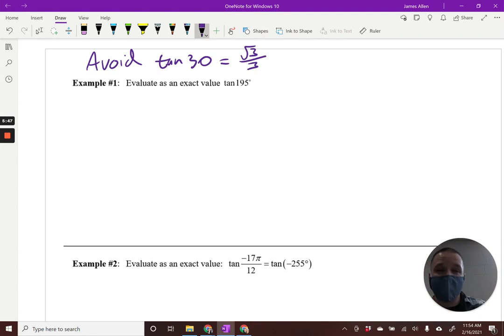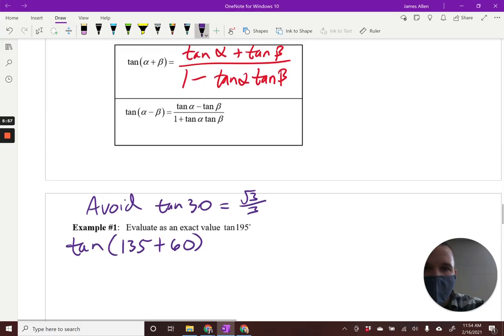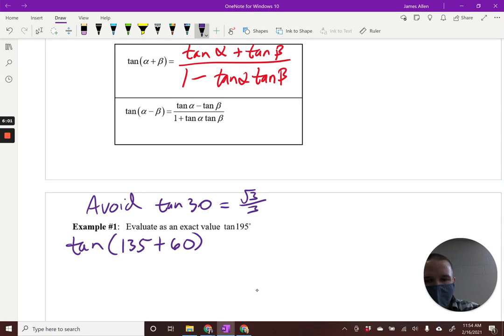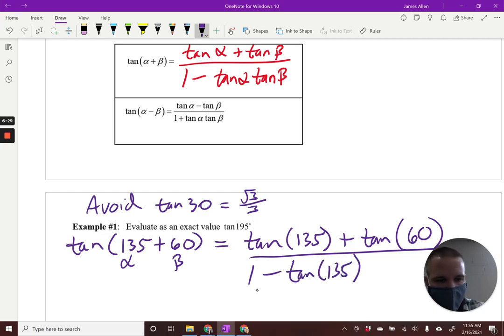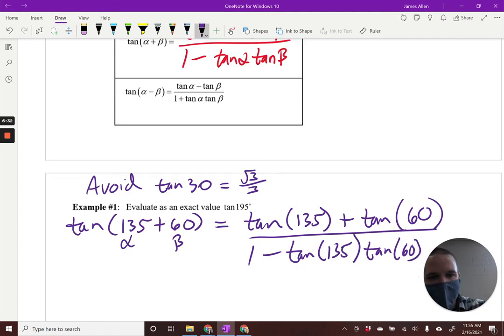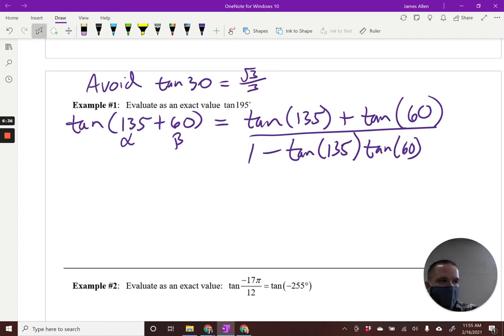Let us continue. So, what values could we use here? How about 135 and 60? So, this will become tangent of 135 plus 60. And just so we have it here handy, we'll keep that up as we set it up this first time. So, this is my alpha, this is my beta. Plug and chug. Let's go. So, we got tangent of 135 plus tangent of 60.